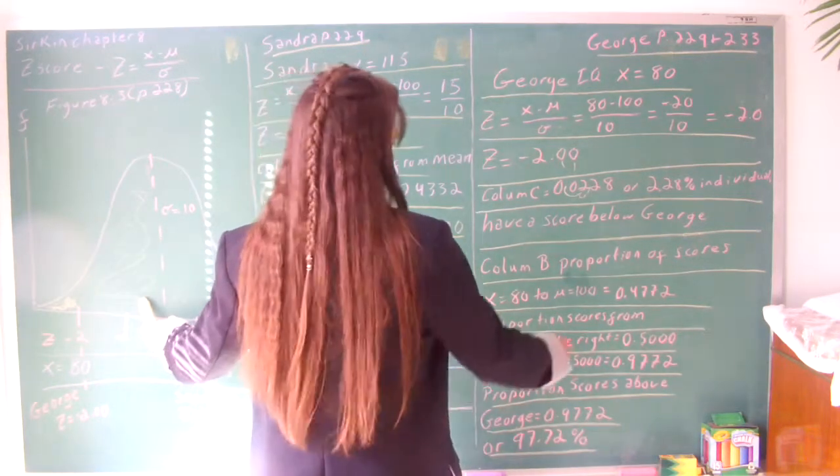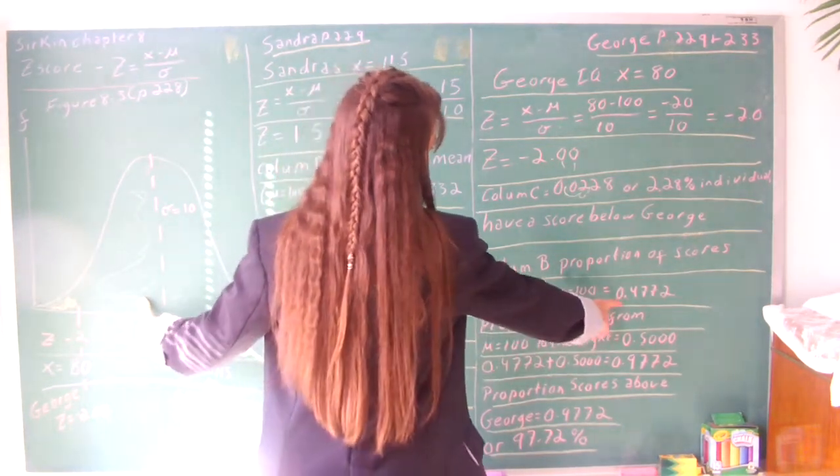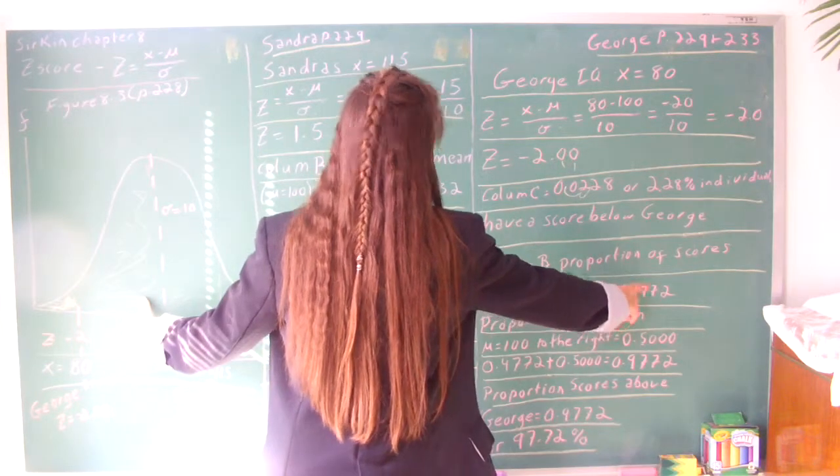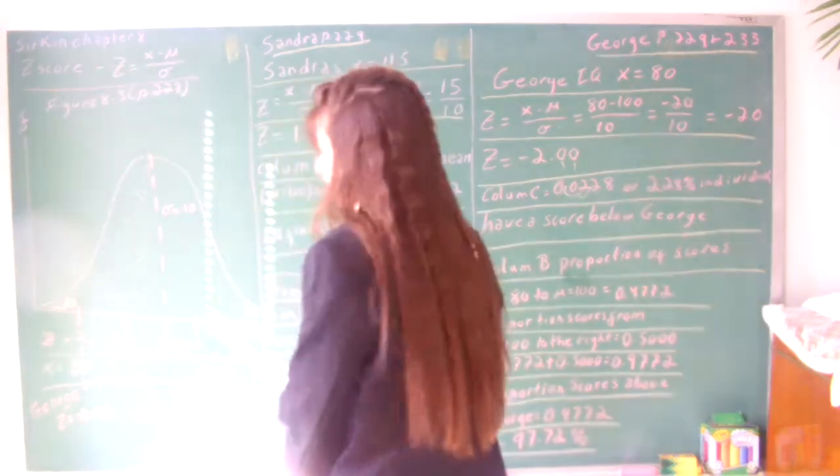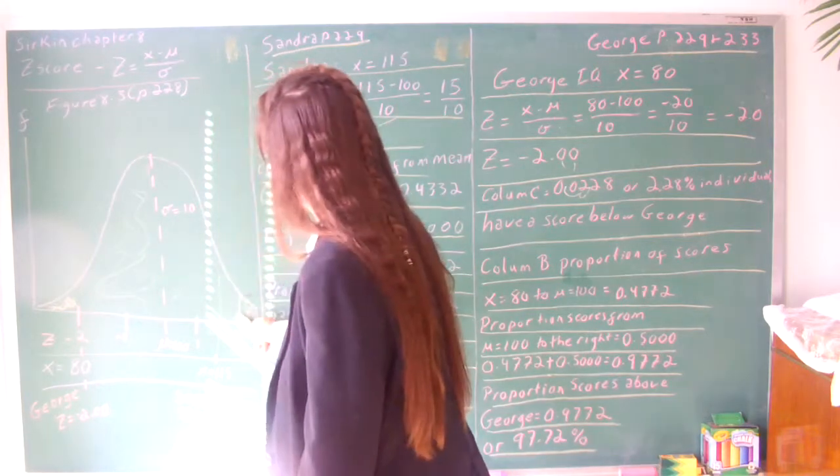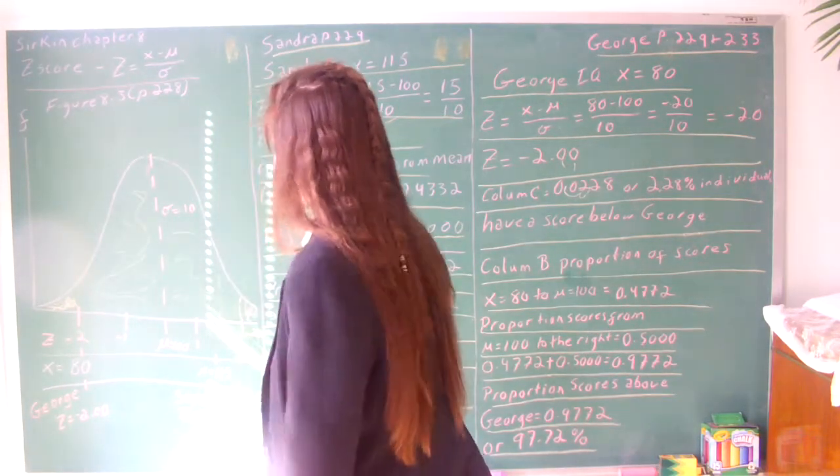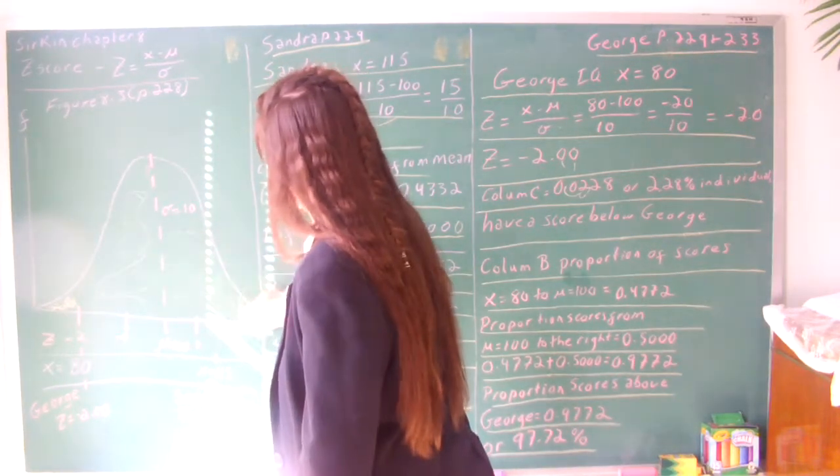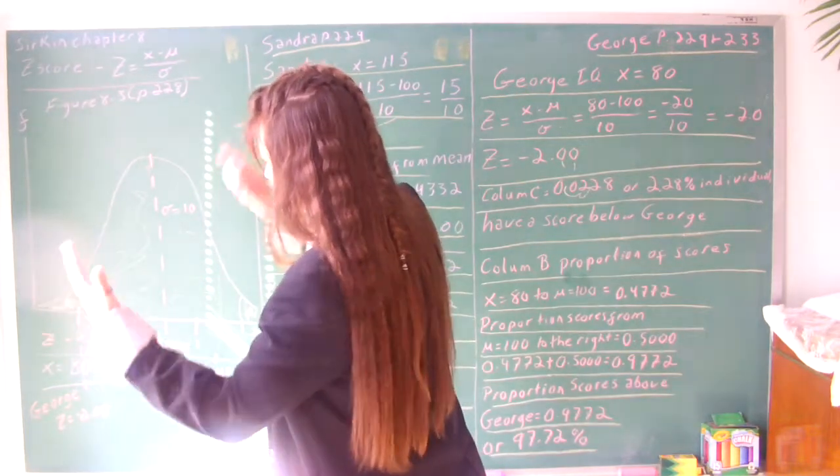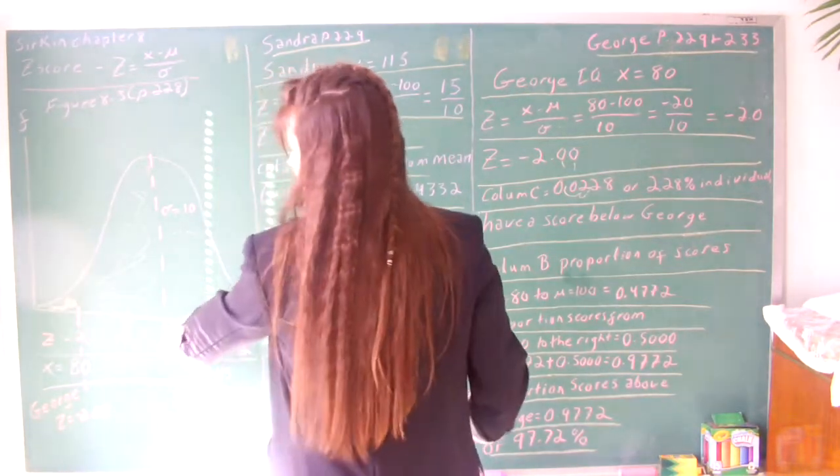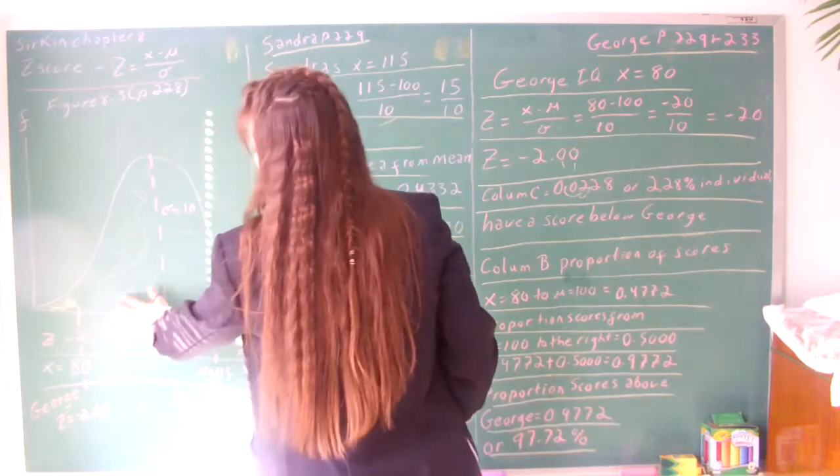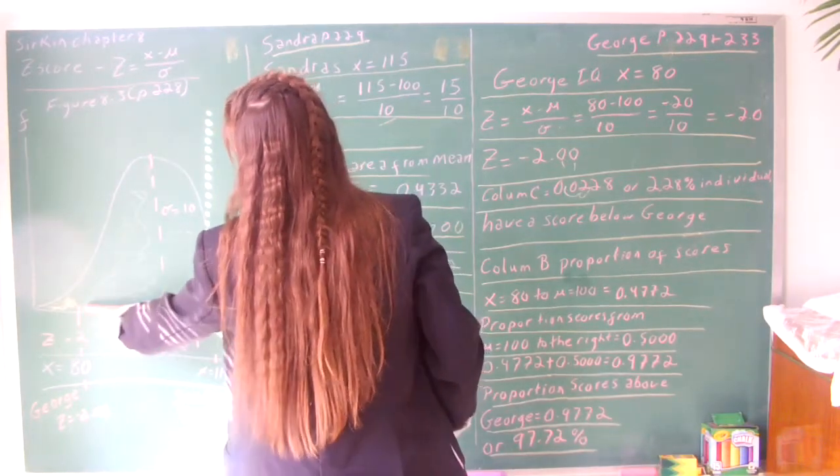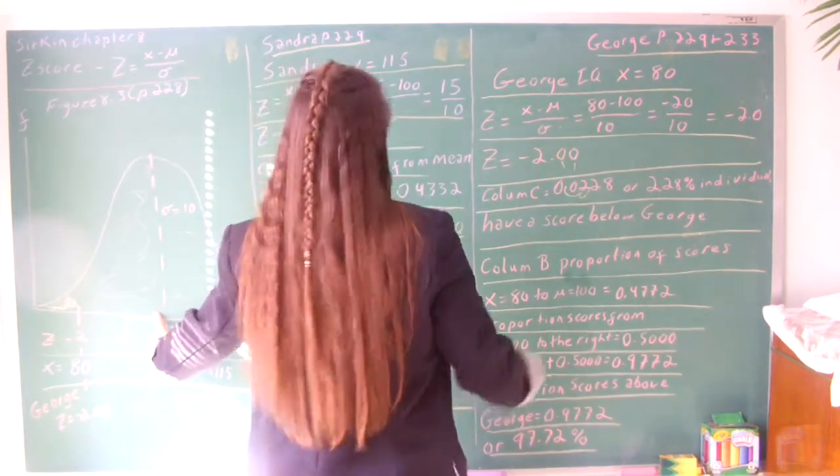It shows the proportion of scores would be 0.4772. Now don't trip on this, because it's showing as a positive. So it's saying how many scores go between this section over to here. But remember, it's the same if you fold this thing in half. So that's the number of scores from his to the mean.